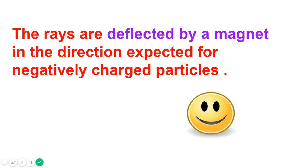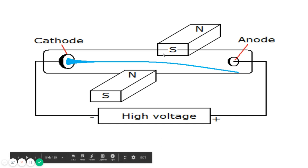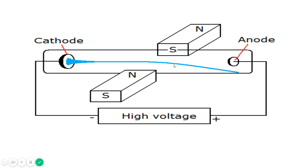Like you can see in the diagram, this is the magnetic field and this is the deflection. This showed, according to physics, that these cathode rays are negatively charged particles.